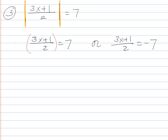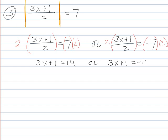Now I want to get rid of that fraction, so I'm going to multiply both sides by 2. I'll do it on the other one as well. So I'll get 3x plus 1 is equal to 14, or 3x plus 1 is equal to negative 14. Keep working through it. Plug and chug.